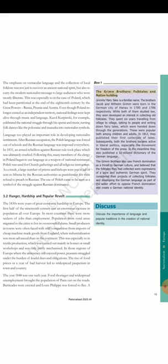The Grimm Brothers, Folk Tales and Nation Building. Grimm's Fairy Tales is a familiar name. The brothers Jacob and Wilhelm Grimm were born in the German city of Hanau in 1785 and 1786 respectively. While both of them studied law, they soon developed an interest in collecting old folk tales. They spent six years travelling from village to village, talking to people and writing down fairy tales which were handed down through the generations. These were popular both among children and adults. In 1812, they published their first collection of tales. Subsequently, both the brothers became active in liberal politics, especially the movement for freedom of the press. In the meantime they also published a 33-volume dictionary of the German language. The Grimm Brothers also saw French domination as a threat to German culture, and believed that the folk tales they had collected were expressions of a pure and authentic German spirit. They considered their projects of collecting folk tales and developing the German language as part of the wider effort to oppose French domination and create a German national identity.